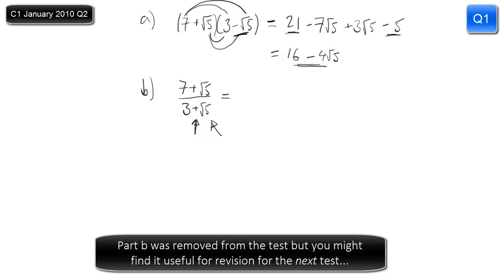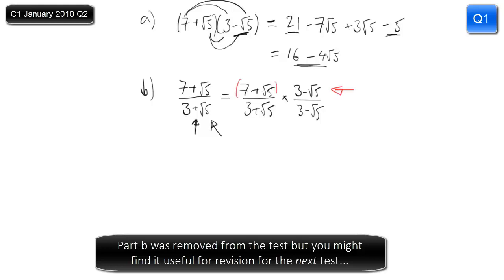Of course we have to do the same thing to the numerator — we can't multiply the denominator by something and not do the same to the numerator, otherwise we're completely changing the value of the fraction. So we're going to have 7 plus root 5 over 3 plus root 5, and we have to multiply top and bottom by 3 minus root 5. Or you could write it as one big fraction: 7 plus root 5 times 3 minus root 5 on the top, and 3 plus root 5 times 3 minus root 5 on the bottom. At this point it's worth noting that what we've got on the numerator — 7 plus root 5 times 3 minus root 5 — that's what we did in part A.